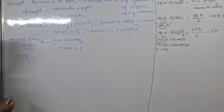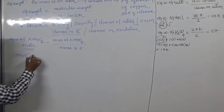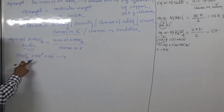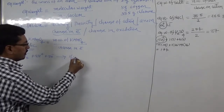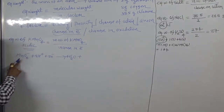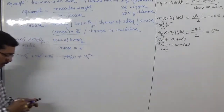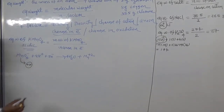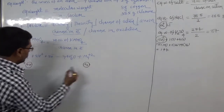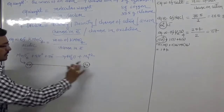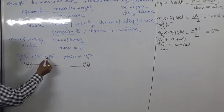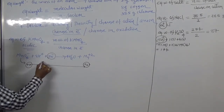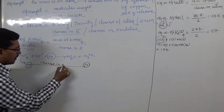In acidic medium, KMnO₄ has a change in electron of 5. MnO₄⁻ in acidic medium reacts with acid; the 4 oxygens combine with hydrogen to give 4 water molecules, and MnO₄⁻ converts to Mn²⁺. Oxidation number of manganese changes from +7 to +2, so the change in oxidation number is 5, meaning MnO₄⁻ gains 5 electrons.